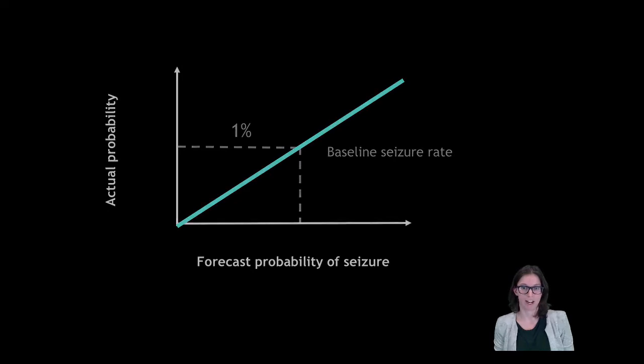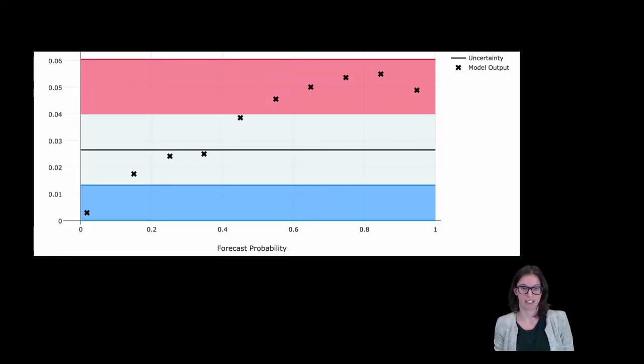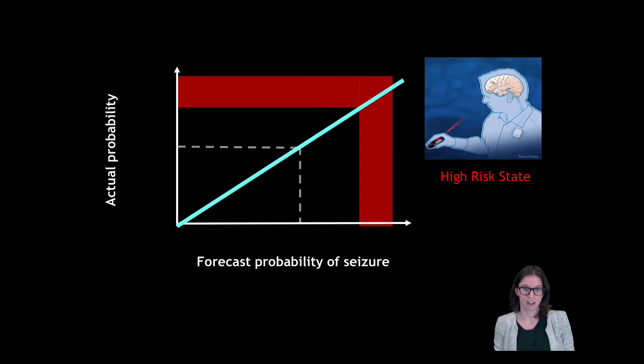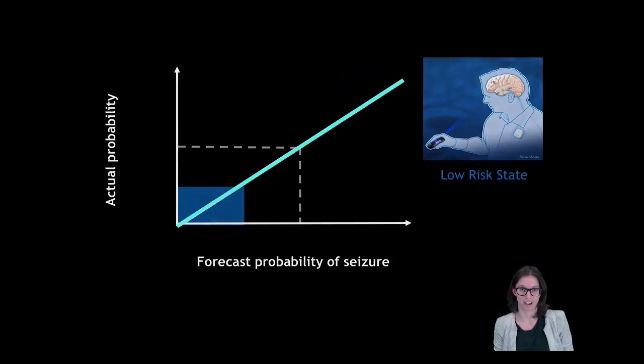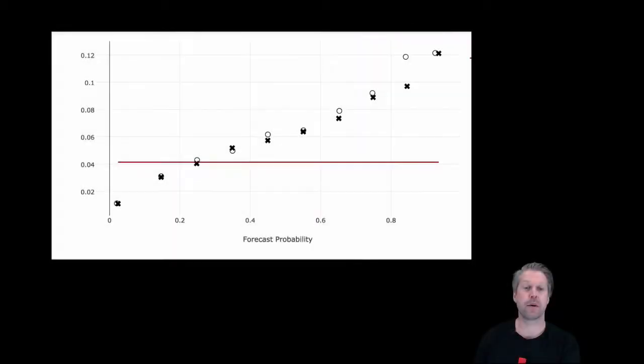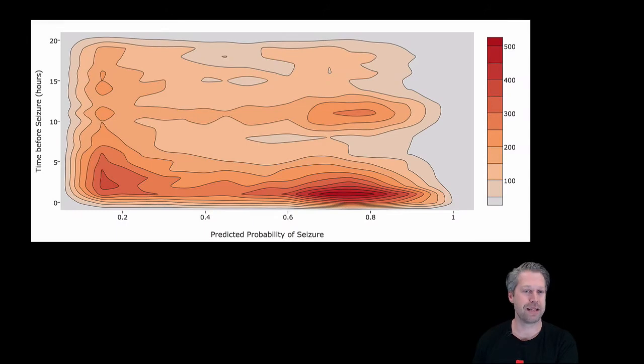When the forecast is the same as the baseline rate, it is considered uncertain. Forecasts that are above or below this baseline rate are used to advise patients of their heightened or decreased seizure risk. The nuances of probabilistic forecasting provide more information for patients to manage their epilepsy.